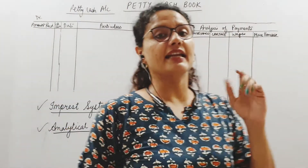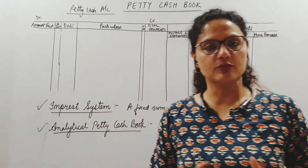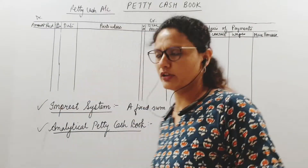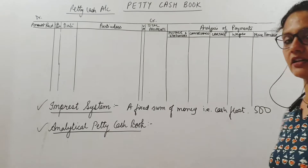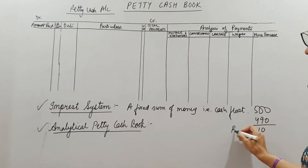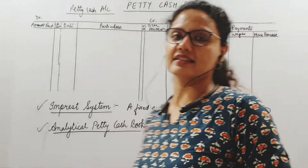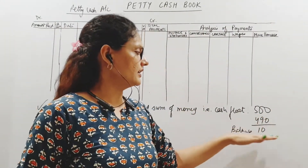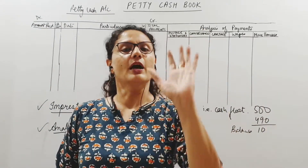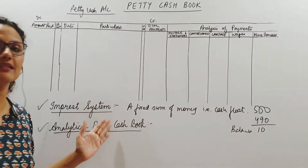Suppose your cash float is 500 and you have spent 490 rupees — 10 rupees balance remains. Next period you will get enough to make it up to 500. You already have 10, so you will get another 490 — as much as you spent, that much is replenished. That is what is called the impressed system: the impressed amount, or cash float, is a fixed sum of money given at the beginning of each period.